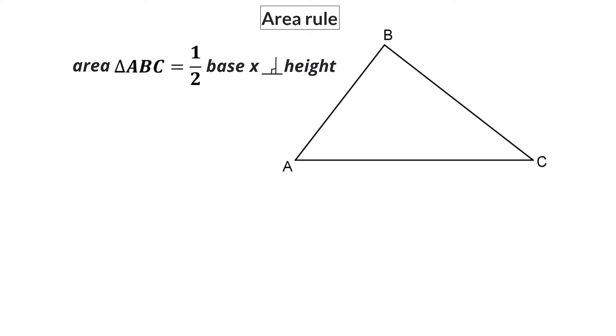Up to now you've been using this formula to calculate the area of a triangle: a half times base times perpendicular height. But this formula requires that you have a perpendicular height in your triangle that you either already know or can calculate the length of. If you don't have this height or can't calculate it, you cannot use this formula.